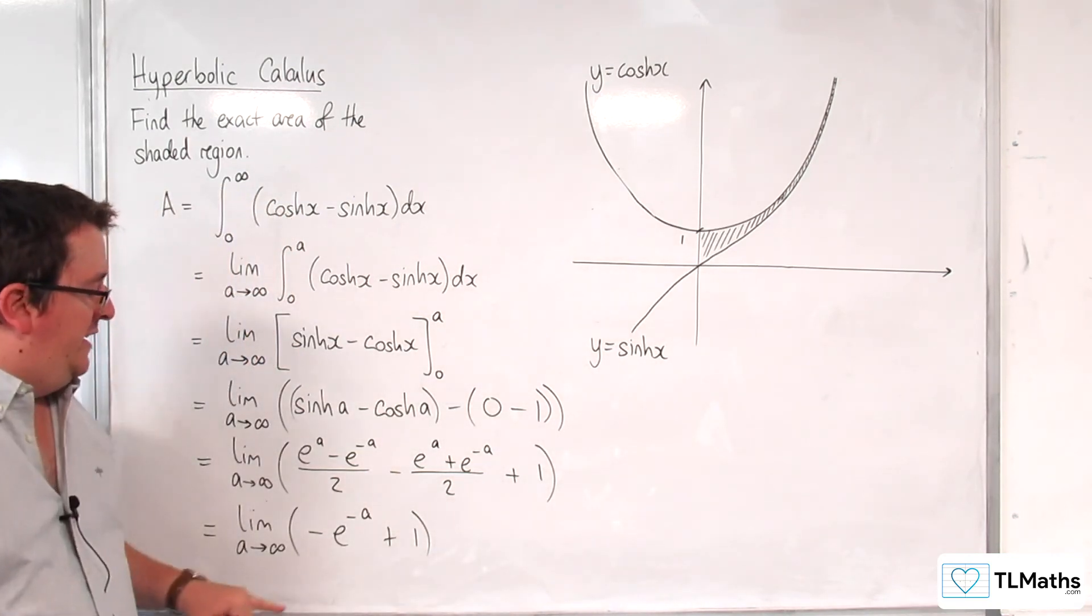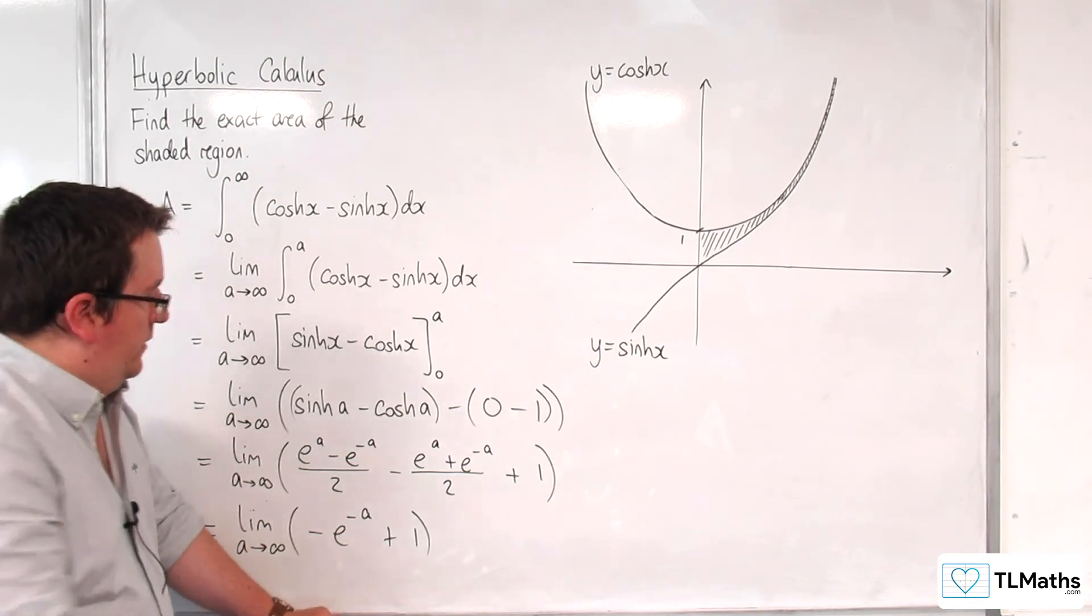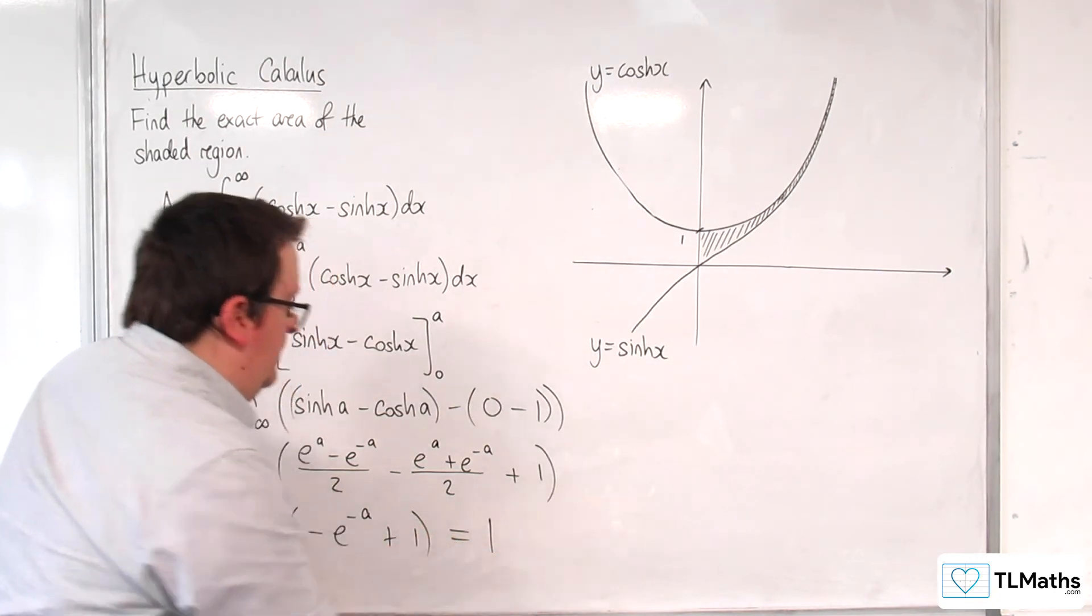Now as a tends to infinity, e to the minus a is going to go closer and closer to 0. So actually, the limit is 1.